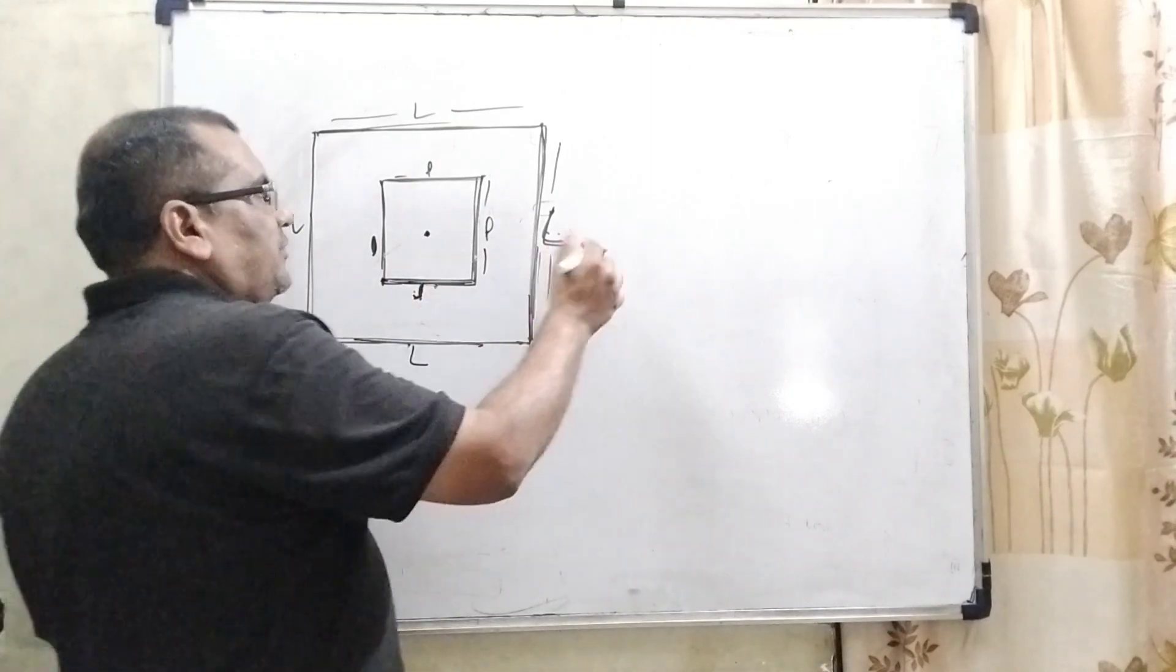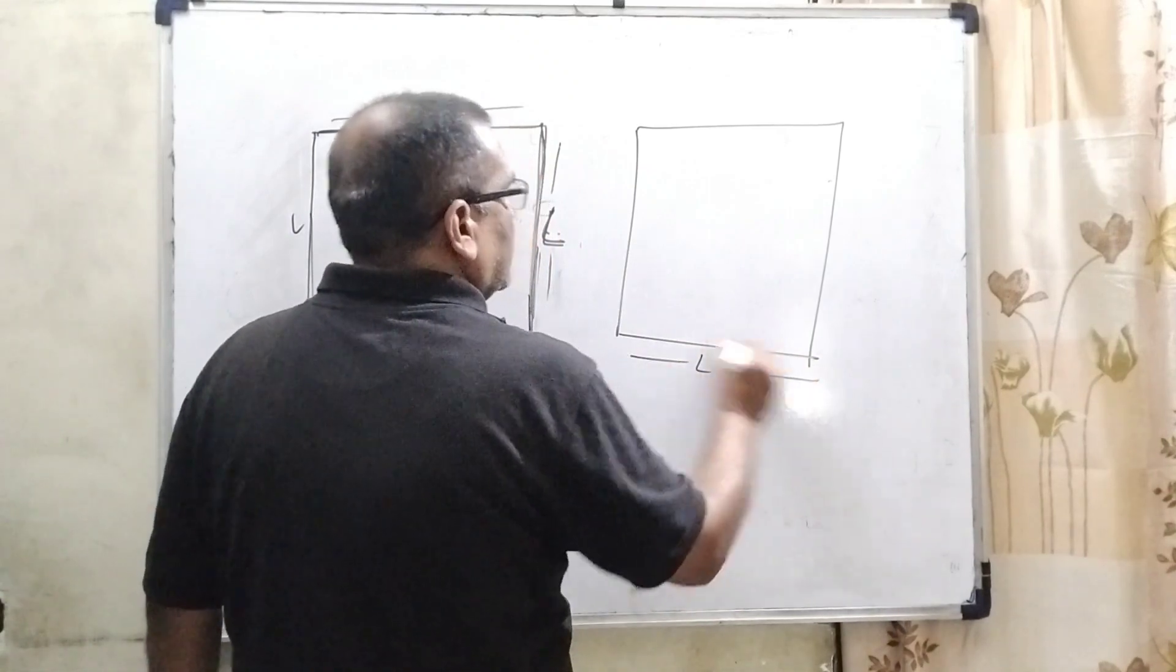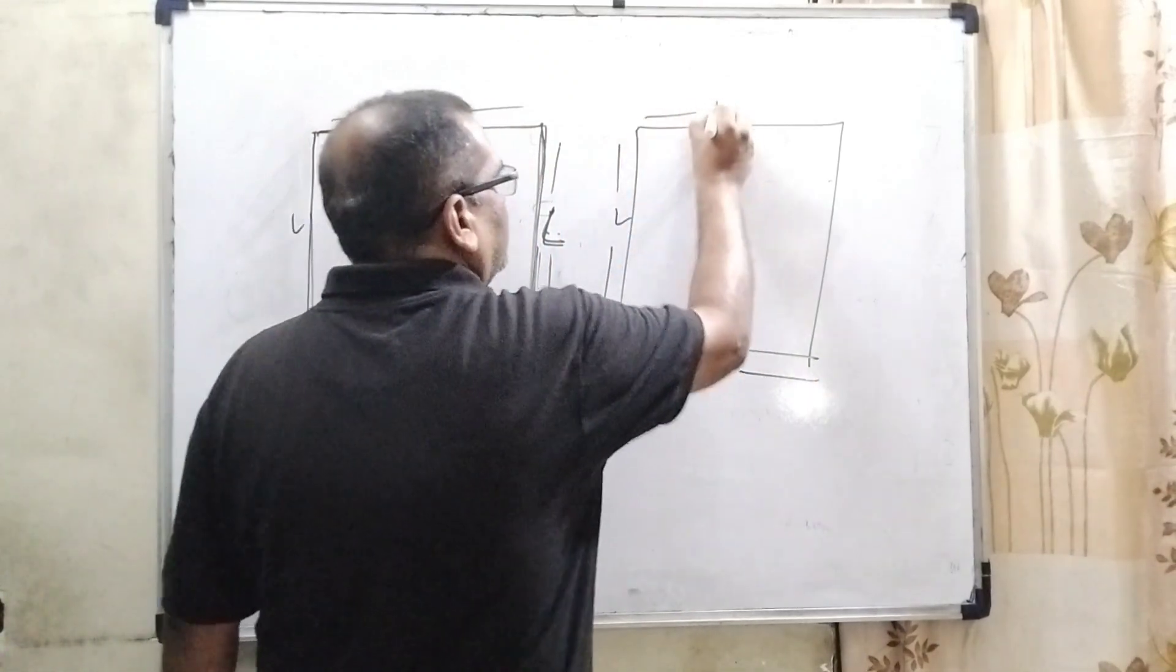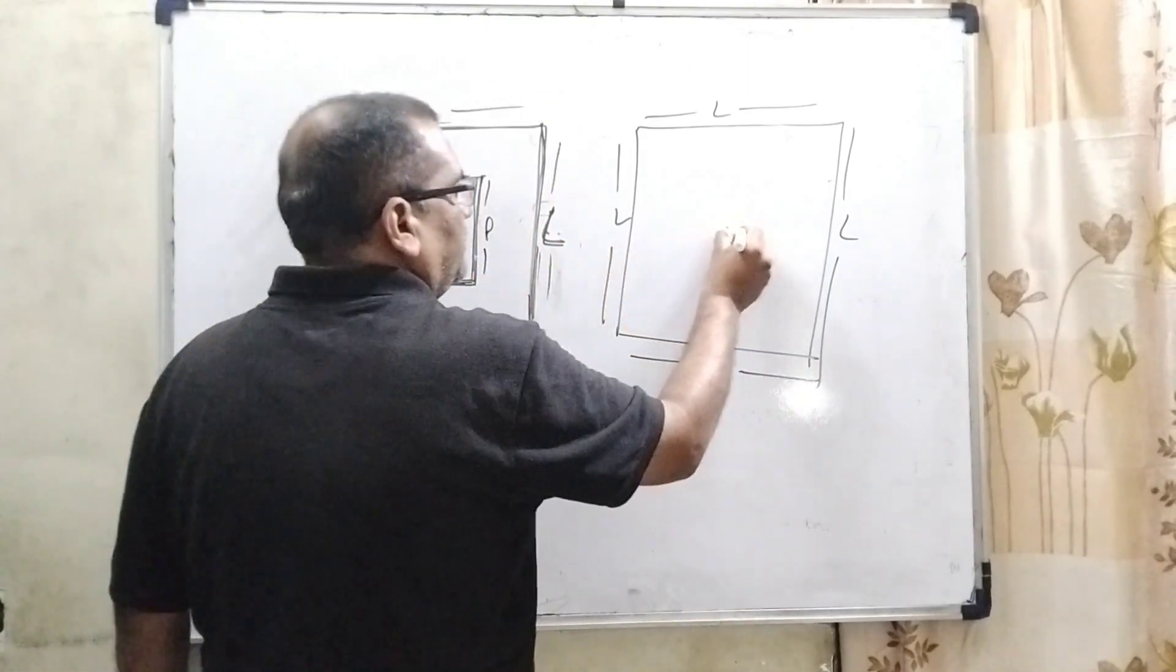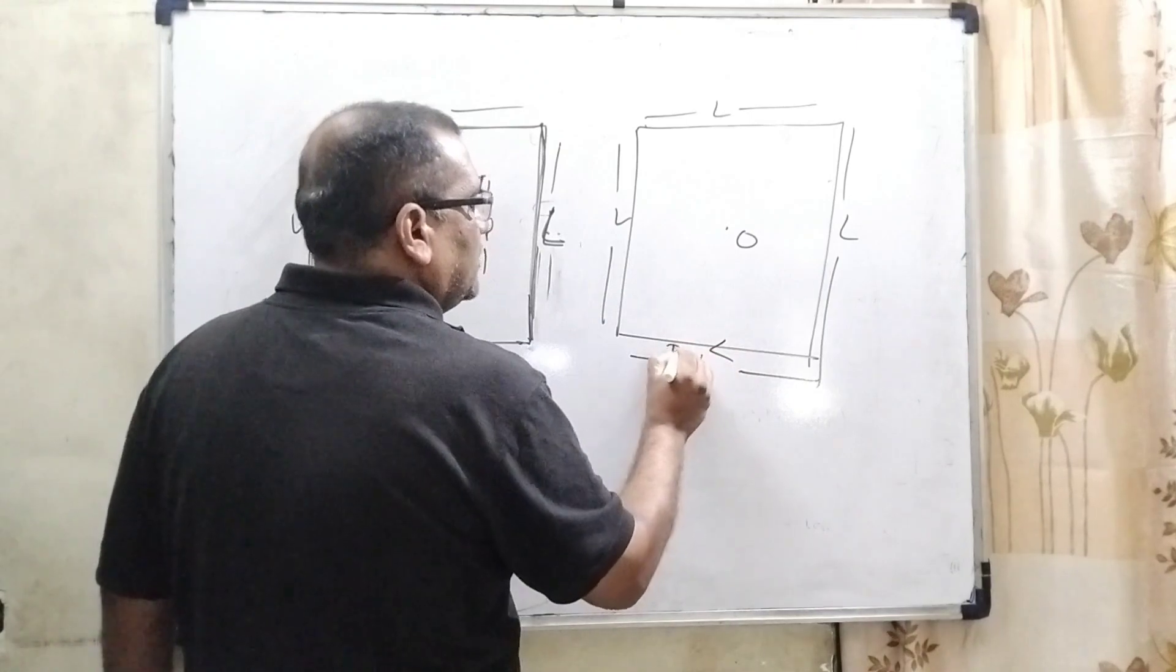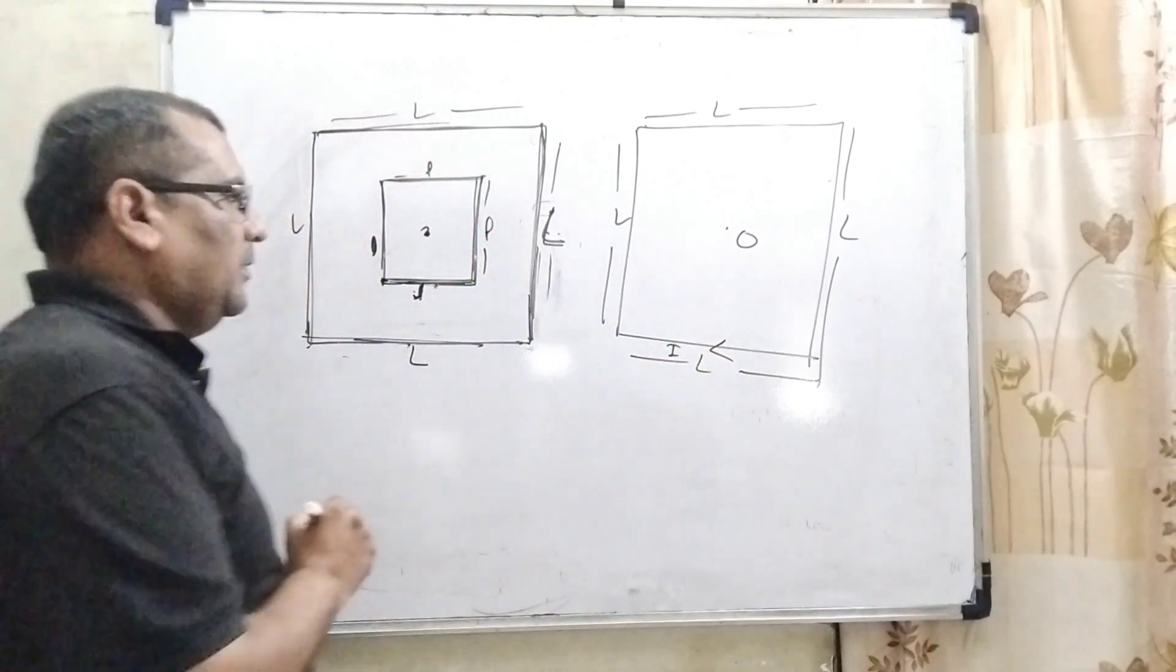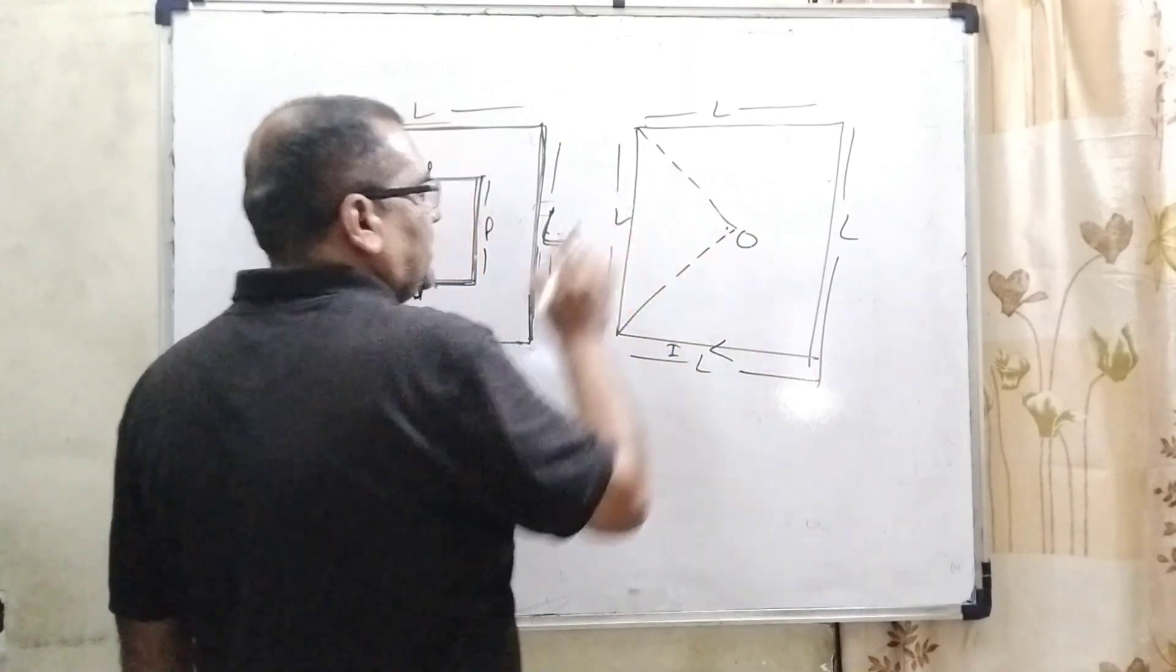So let us first redraw this bigger loop again, which has side L. And its center is O. And let us suppose current I flows in this bigger loop.